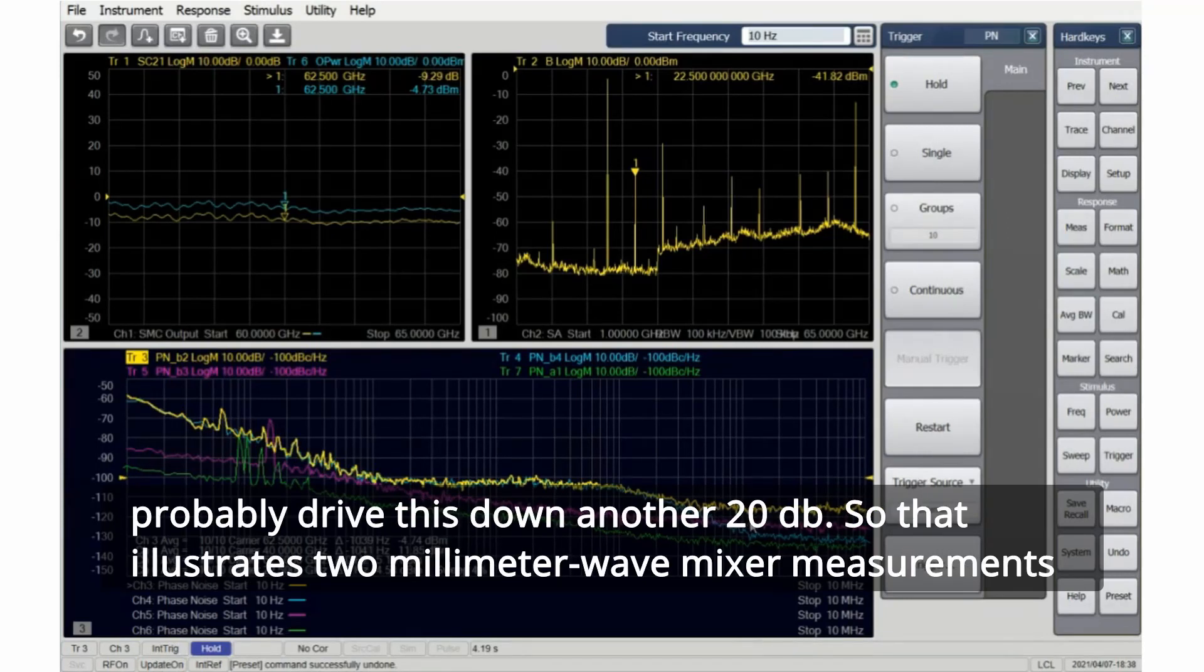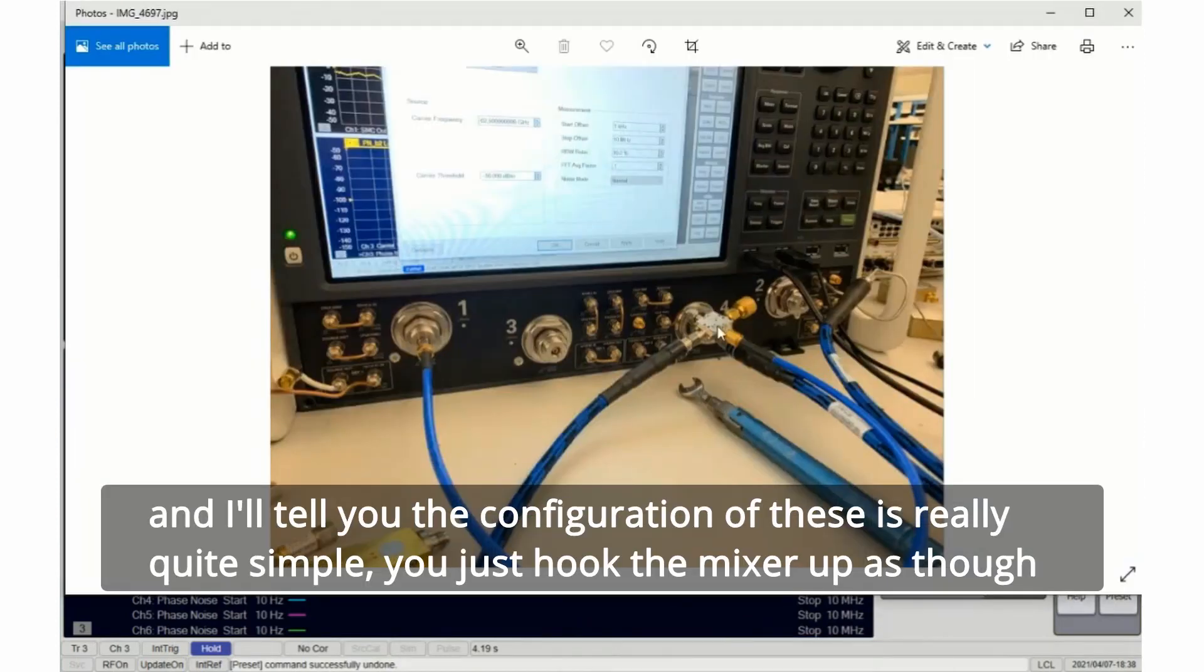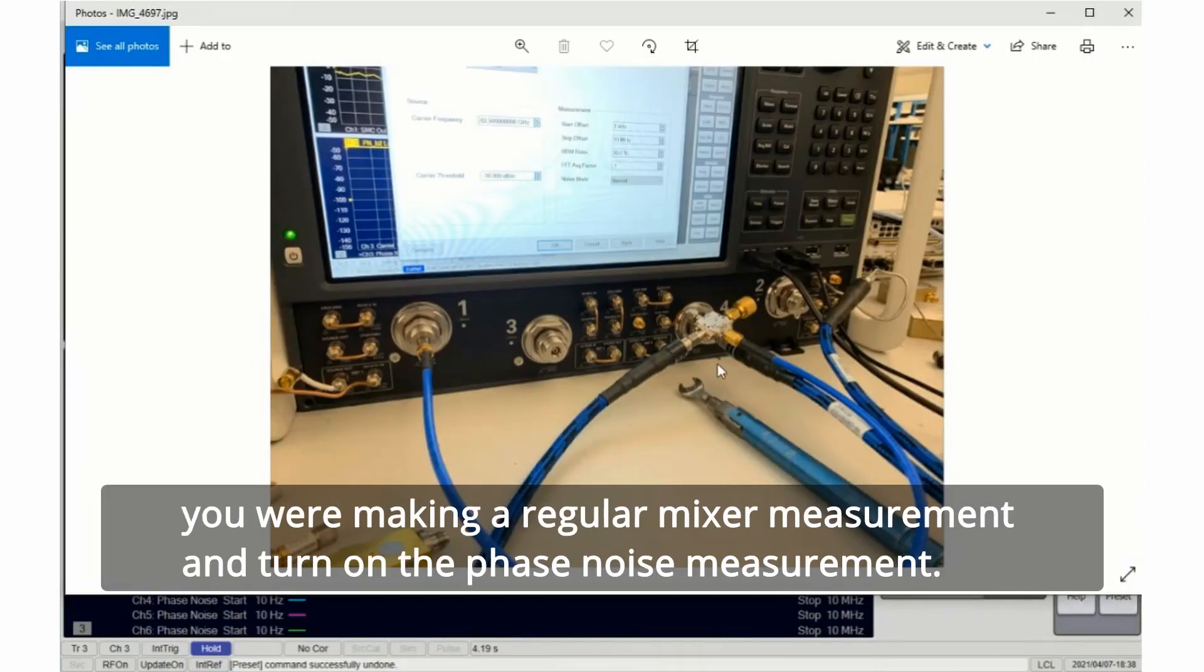So that illustrates two millimeter wave mixer measurements. I'll tell you, the configuration of these is really quite simple. You just hook the mixer up as though you were making a regular mixer measurement and turn on the phase noise measurement.